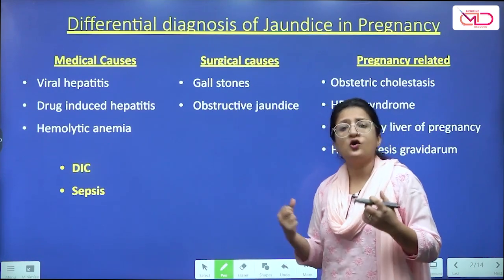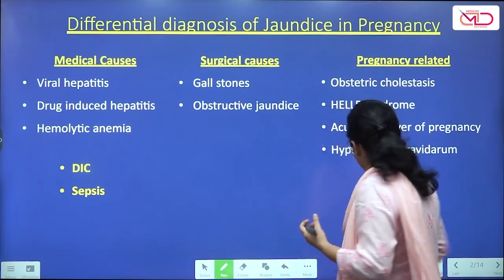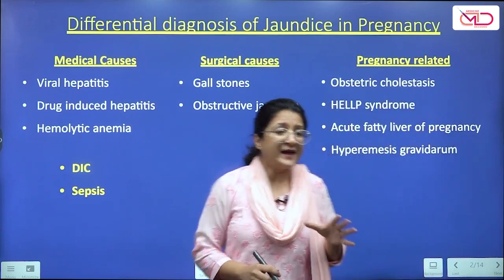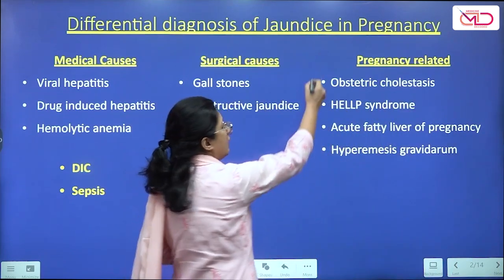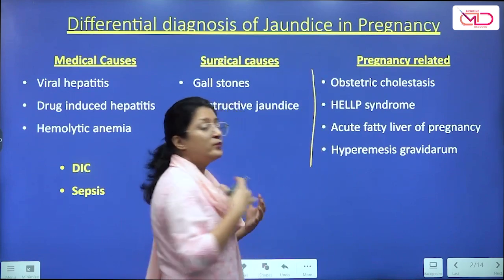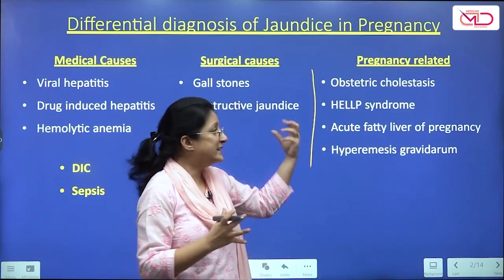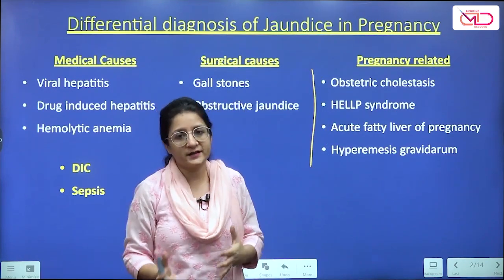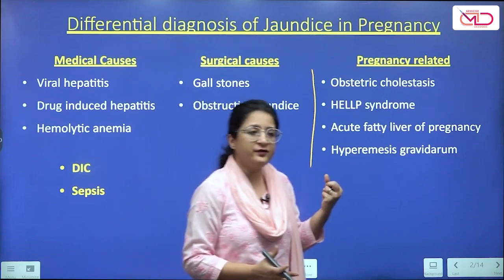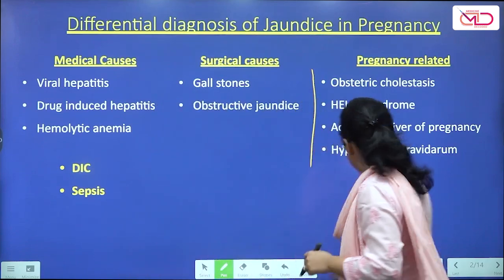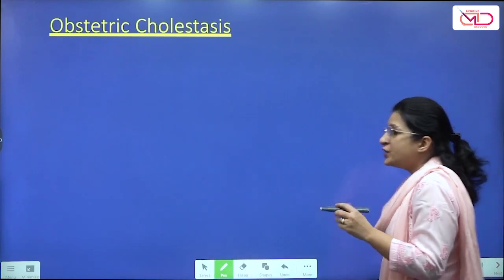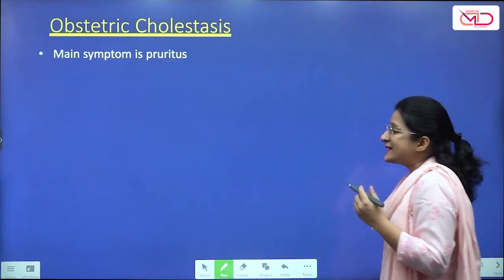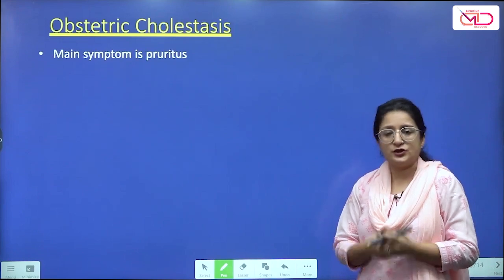Jaundice can also occur along with sepsis or disseminated intravascular coagulation. Now I would like to focus first on the pregnancy-related important causes. I'm going to give you a brief recap of what these conditions are, so this is a revision. First, obstetric cholestasis — it is a pregnancy-related, estrogen-related condition.